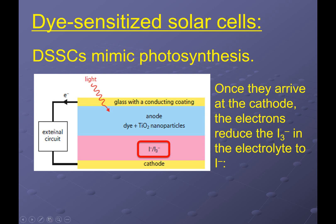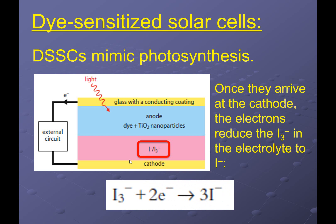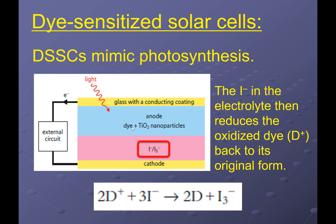Once the electrons have traveled through the external circuit, I've been able to taper off some of that electrical energy. I need something willing to gain those electrons — they have to be reduced. Triiodide is a very common chemical used for this. Triiodide picks up those electrons and reforms iodide to complete the circuit. We end up with I- as the reduced species. The dye became D-star when it absorbed light energy, and upon ionization became D-plus. Then the I- can actually reduce the D-plus back into the regular neutral dye, which is now ready to absorb fresh light energy again.